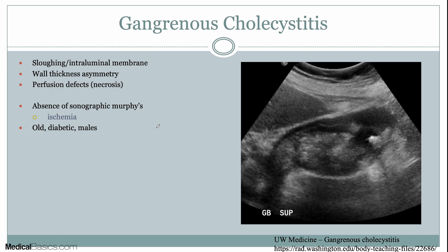Now we're going to talk about some complications of cholecystitis. When things go on too long without treatment, one complication is gangrenous cholecystitis — essentially, sloughing of the mucosa of the gallbladder wall. What we're seeing here are multiple membranes: here's the gallbladder wall, and you can see another membrane that has sloughed off, along with some asymmetry in the wall. Gangrenous cholecystitis is diagnosed by seeing those multiple layers that have sloughed or fallen off from the gallbladder wall.